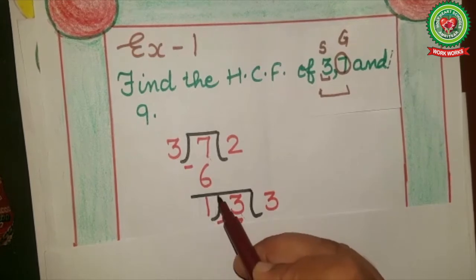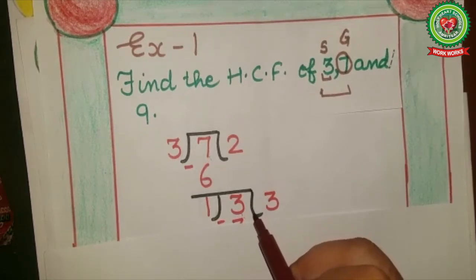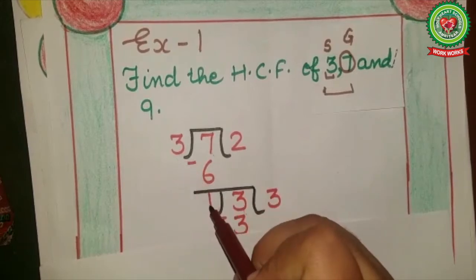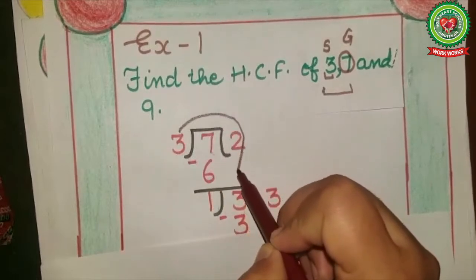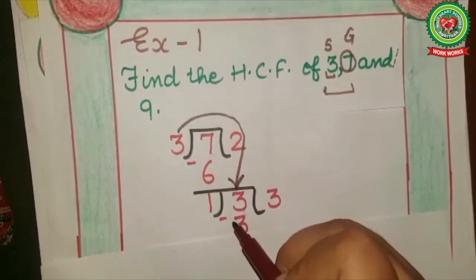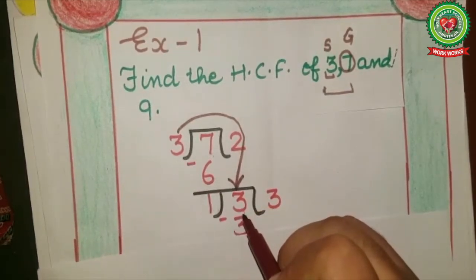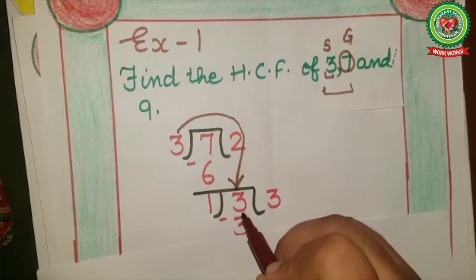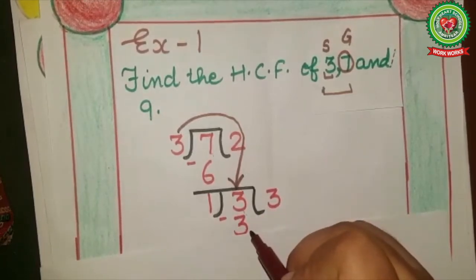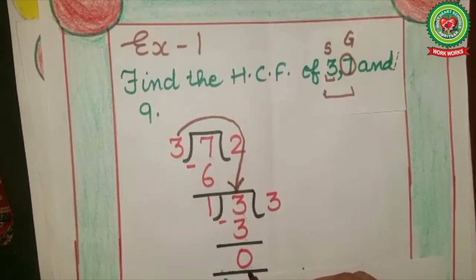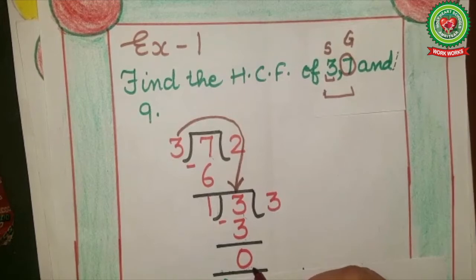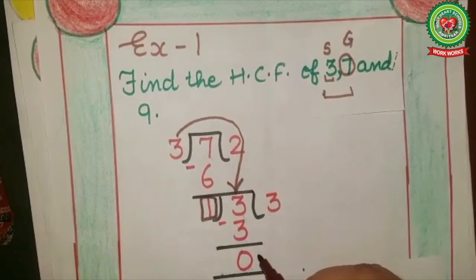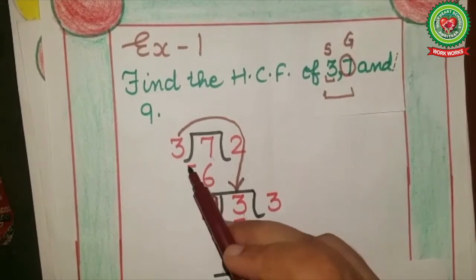Since the remainder is not equal to zero, we have to divide again. Step two says: if the remainder is not equal to zero, divide the divisor by the remainder. So the previous divisor, 3, will become the new dividend. Now check: does 3 come on the 1 times table? Yes, 3 comes on the 1 times table — one three is 3. Next step: 3 minus 3 equals 0. Remainder is zero, so the divisor of this division is the HCF and we stop. HCF of 3 and 7 is 1.